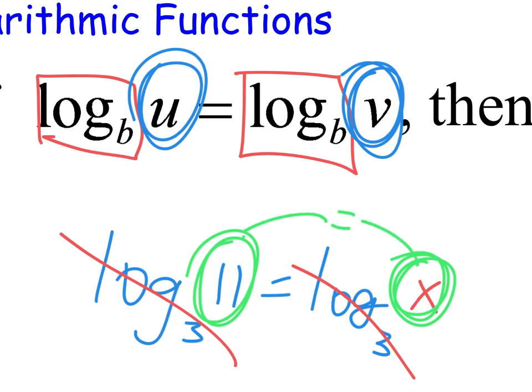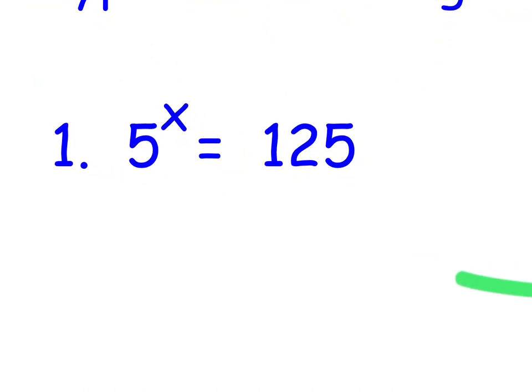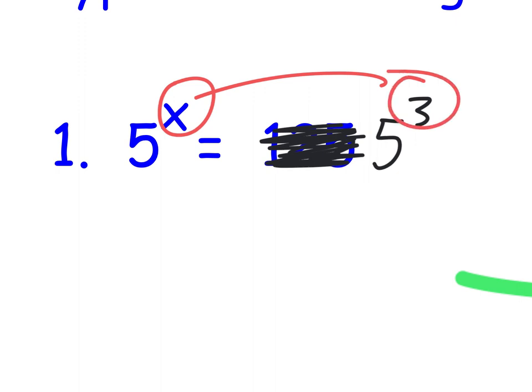We're going to use that a lot today. Because typically you have a question like this. And remember everybody saying, if we can make the bases the same, the answer will be there? Well, 125 is really 5 to the 3rd. And now the bases are the same. So the answer's already there. x equals 3.